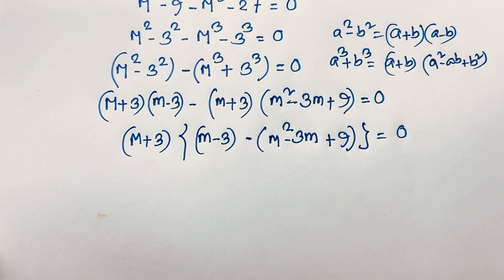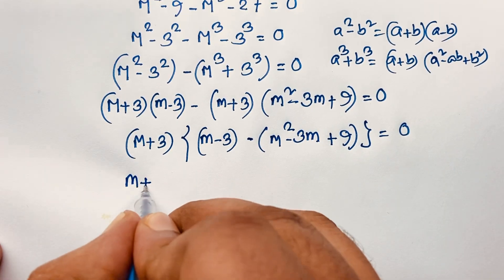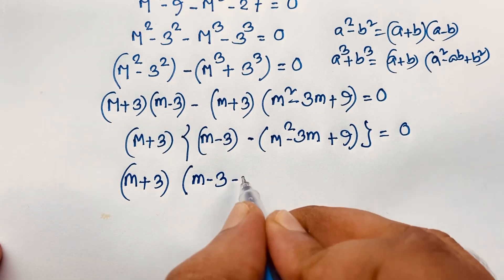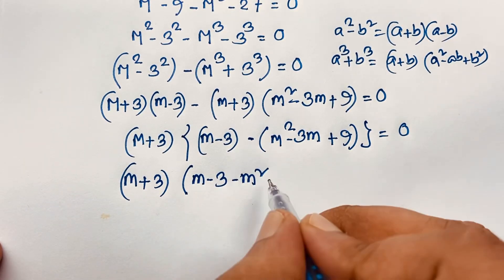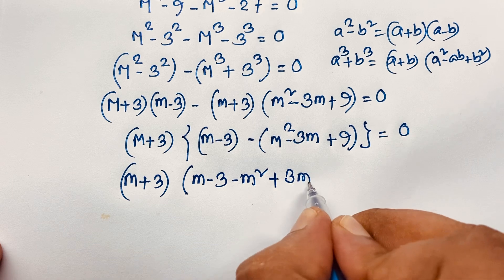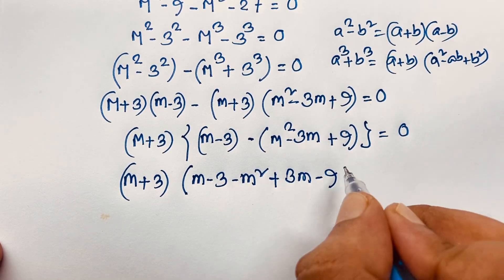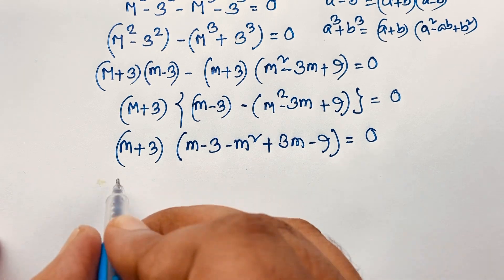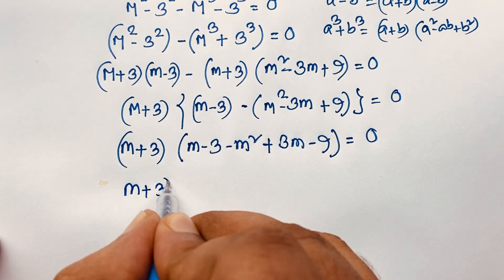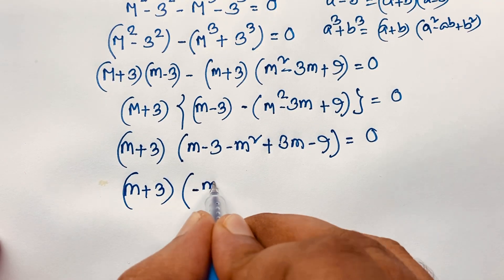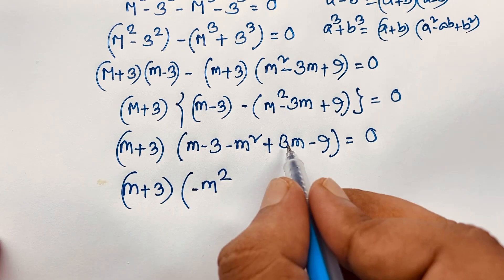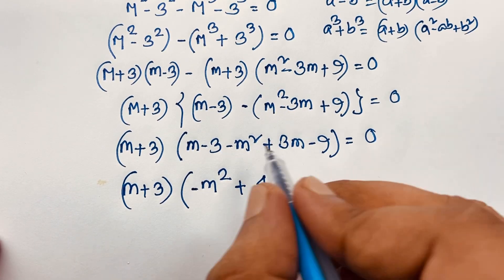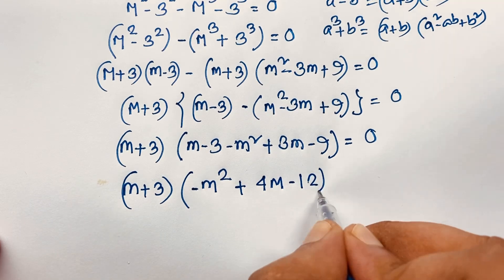Then here: m plus 3 times m minus 3 minus m squared — careful with the signs: minus minus gives plus 3m, and minus 9 — is equal to 0. Now here m plus 3, then it will be minus m squared, and taking this together: 3m plus m gives 4m, then 9 minus 3 gives... and the constant term gives 12 — wait: it will be minus m squared plus 4m minus 12, is equal to 0.